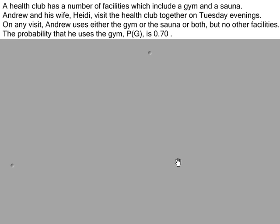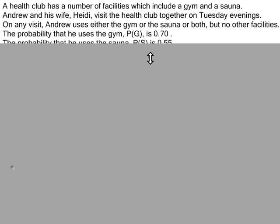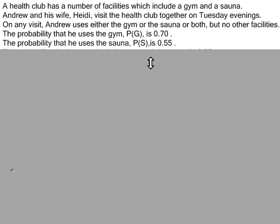Now for the numbers. The probability that he uses the gym, P(G), is 0.7. The probability that he uses the sauna, P(S), is 0.55. And the probability that he uses both the gym and the sauna is 0.25.